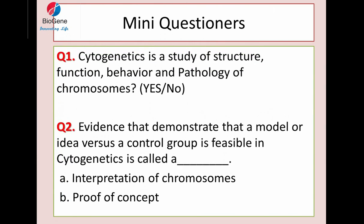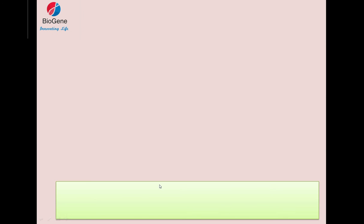Here is a mini-questionnaire. Hopefully you can answer and do post your answers in the comment section below. First question: Cytogenetics is the study of structure, function, behavior, and pathology of chromosomes — yes or no? Second question: The evidence that demonstrates that a model or idea versus a control group is feasible in cytogenetics is called a blank. Option A: interpretation of chromosome. Option B: proof of concept. Mark your answer in the comment section below and I will try my best to answer as soon as possible.